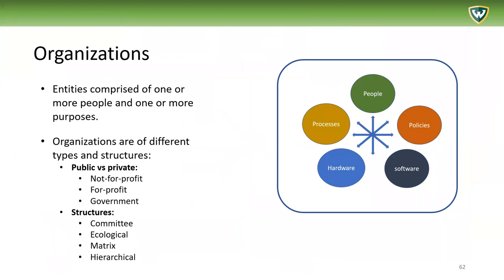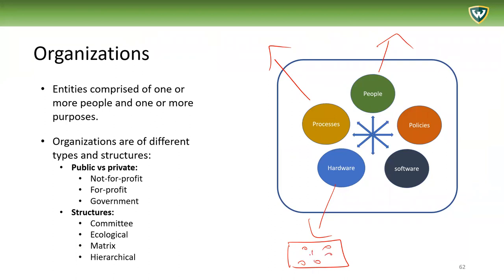Organizations are entities comprised of one or more people with one or more purposes. When we're talking about information systems, they exist within organizations — this is the border where we usually find people, processes, policies, hardware, and software, although they are connected to the outside world. They are connected to other organizations that have their own policies, peoples, and processes.